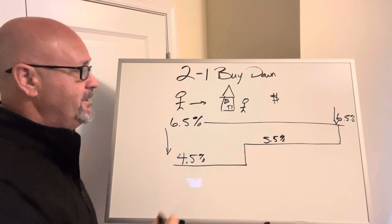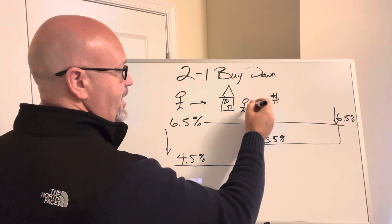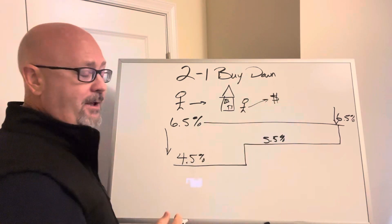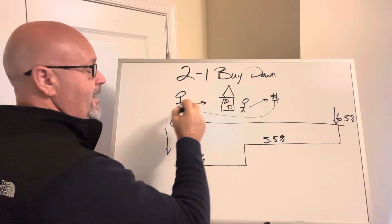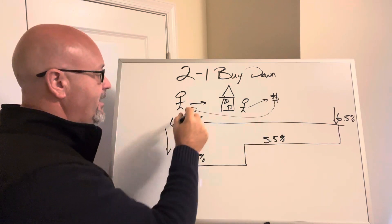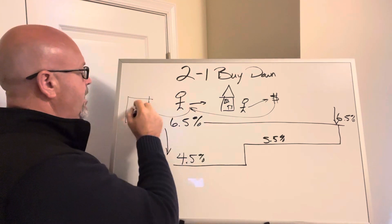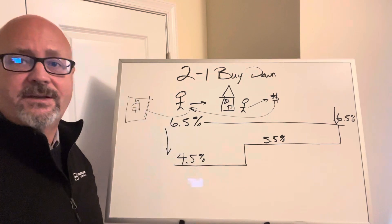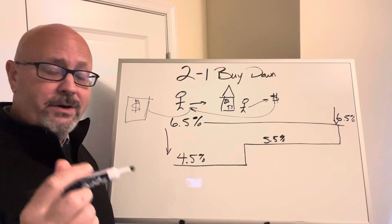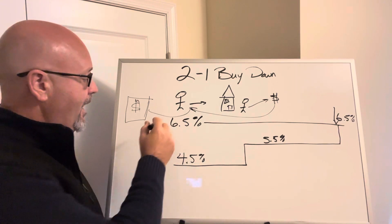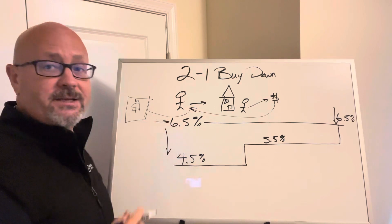Now the way that this ends up working is that the seller would concede this money to help the buyer, and this money is going to go over to the buyer. But it's not going directly to the buyer; it's going to go into what's called an escrow account. That money is going to sit in this escrow account because when I lock the loan, I am truly locking it at 6.5%.